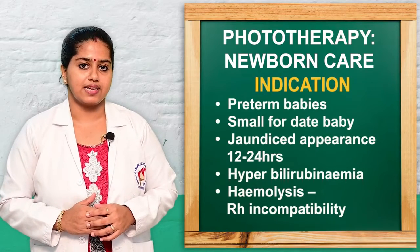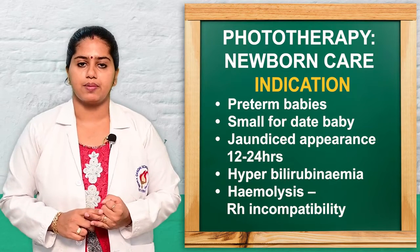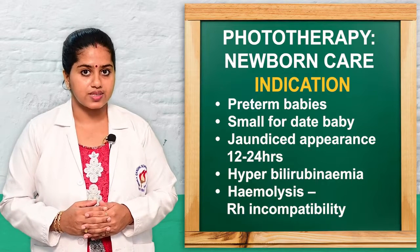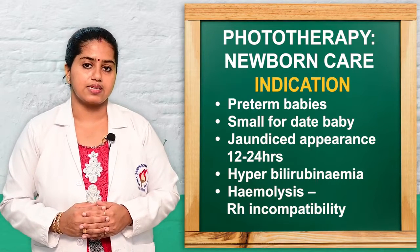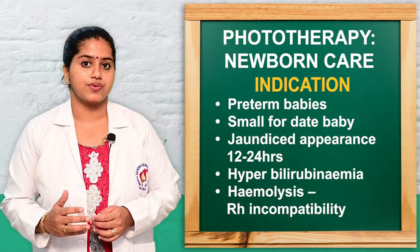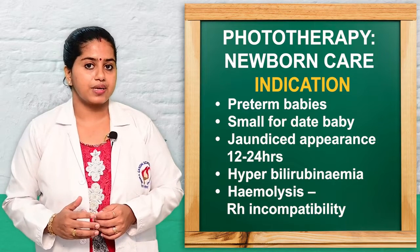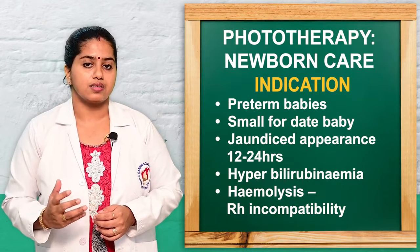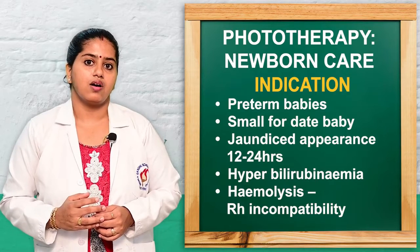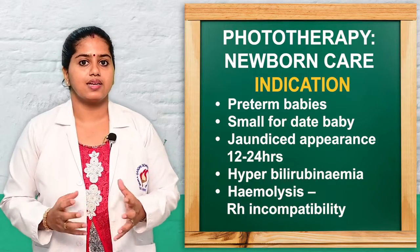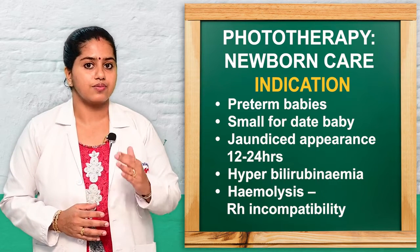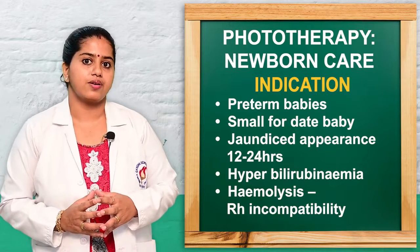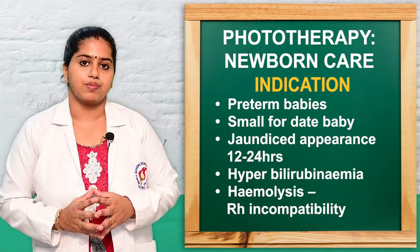What are the indications? Indications include preterm baby, small for date baby, newborn babies having jaundice — that is yellow discoloration throughout the skin — and hyperbilirubinemia. If the bilirubin count is more than 12 to 15 milligram per deciliter in the serum level, or in the preterm more than 11 milligram per deciliter. Also RH incompatibility complications such as erythroblastosis or icterus gravis neonatorum are indications for phototherapy — that is exposure to blue-green light, ultraviolet or infrared radiations.